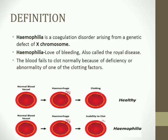The definition: hemophilia is a coagulation disorder — a disorder related to clotting — arising from a genetic defect of the X chromosome. So it is a sex-linked recessive disorder. The word 'hemophilia' means love of bleeding, and it is also called the royal disease.